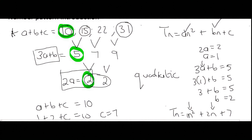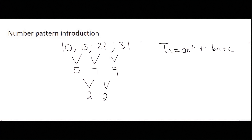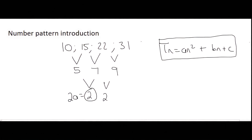Now I'll show you the other method some schools use. If I've already shown the method your school uses, you can skip this part and carry on to the next slide. The beginning is the same — you still verify it's a quadratic number pattern, use the same general formula, and find A the same way: 2A = 2, so A = 1.